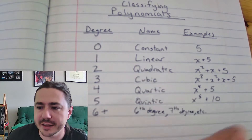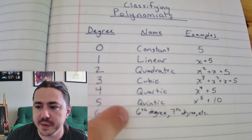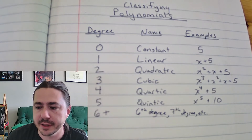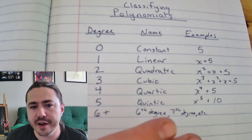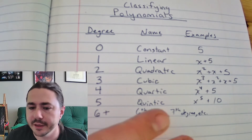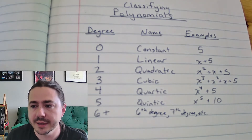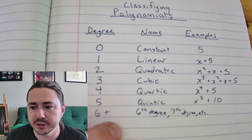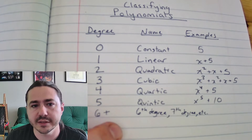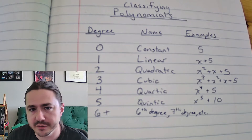So there is the full polynomial classification based on degree. You might want to write that down somewhere if you don't have it handy — if you get asked what the name of a polynomial is, it'd be nice to have a little chart like this. Make sure you write this out or at least pause the video to take a snapshot of it.